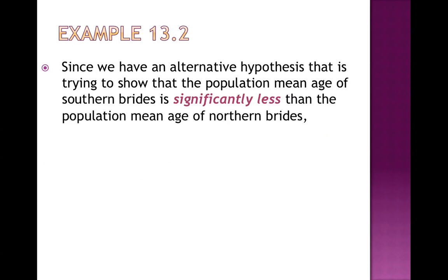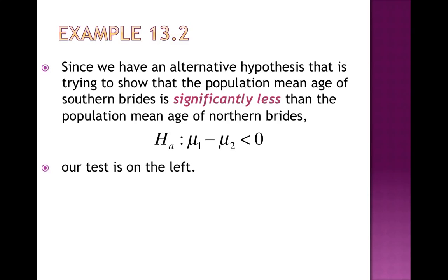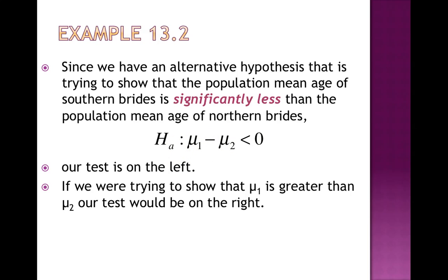Since the alternative hypothesis is trying to show that the population mean age of Southern brides is significantly less than that of Northern brides, the test will be on the left — the significant tail is the left tail. Whenever you have less than 0 as your alternative hypothesis, the test is on the left. If you have greater than 0 in the alternative hypothesis, the test is on the right. So if μ₁ > μ₂, our alternative hypothesis would be μ₁ − μ₂ > 0 and the test would be on the right.